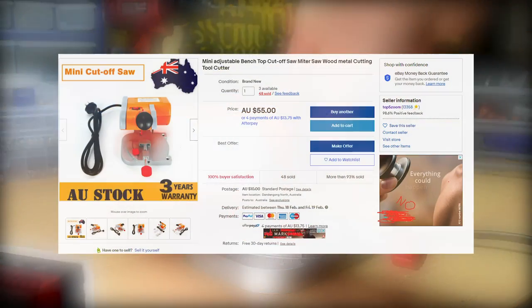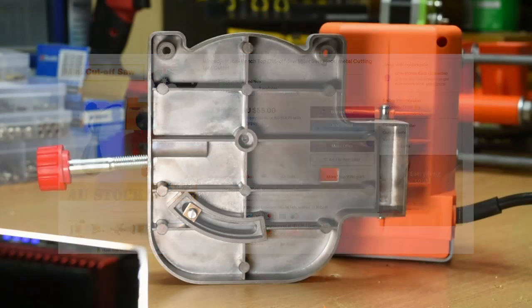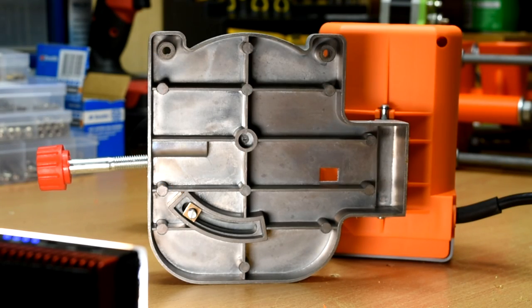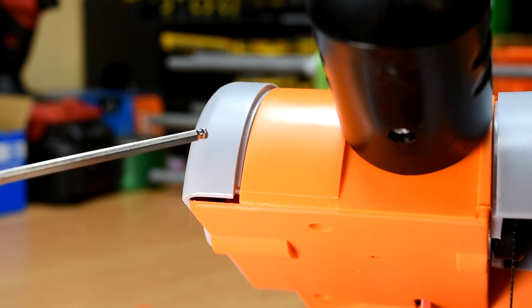The saw itself was surprisingly steadily built for the price. The base and the vise are both cast aluminium, and the plastic pieces don't actually feel that cheap, even if the fit of some pieces isn't particularly appealing.